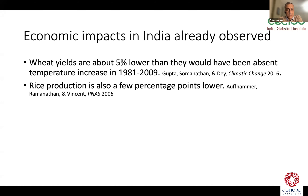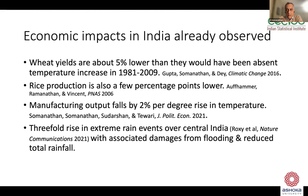In the non-agricultural sector, heat stress has an effect on labor productivity, resulting in a fall in manufacturing output of the order of about 2% per degree rise in temperature. There have been other impacts — for example, a three-fold rise in extreme rain events over central India, associated with damages from flooding, and also reduced total rainfall in the same period for central India.